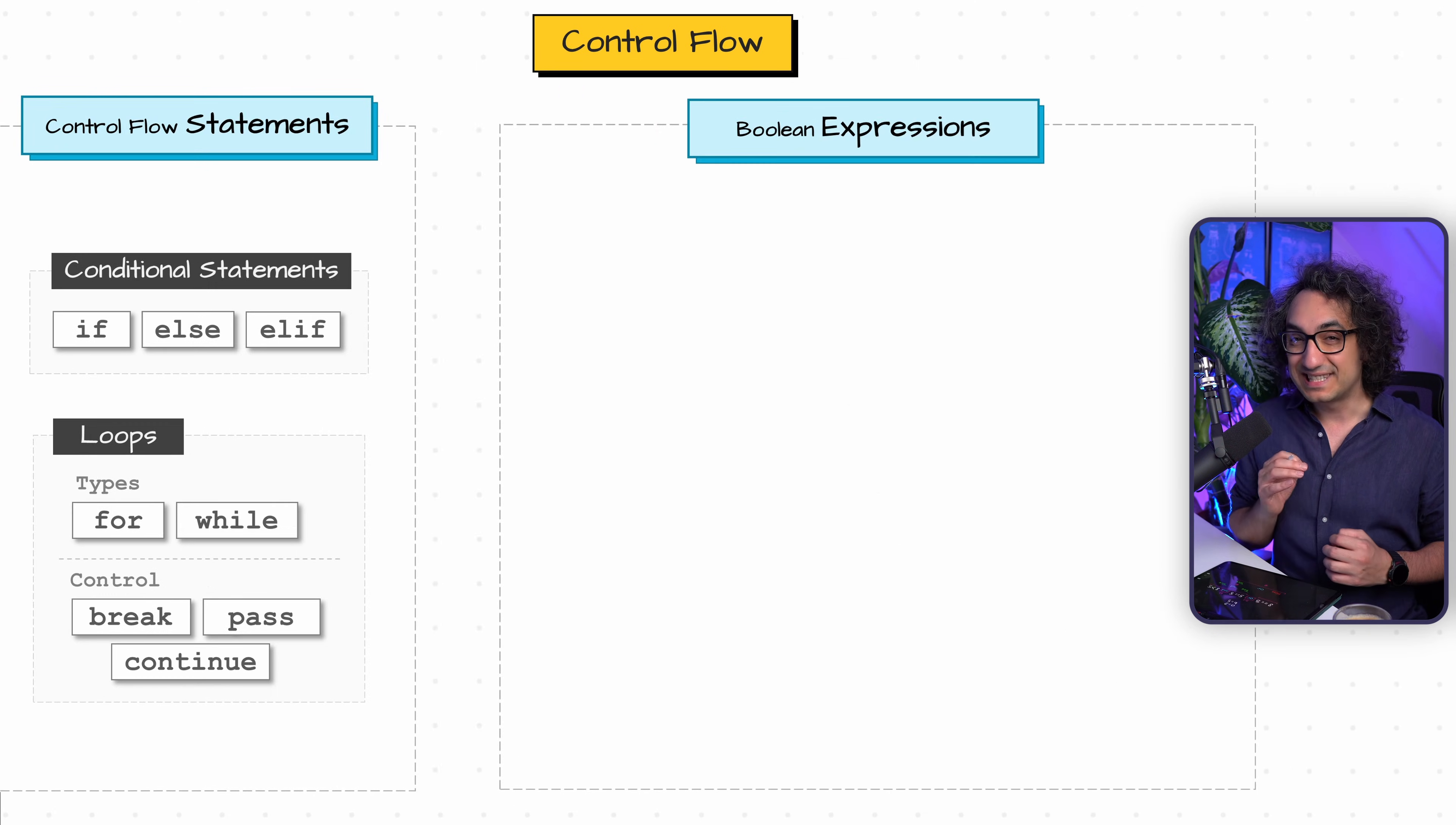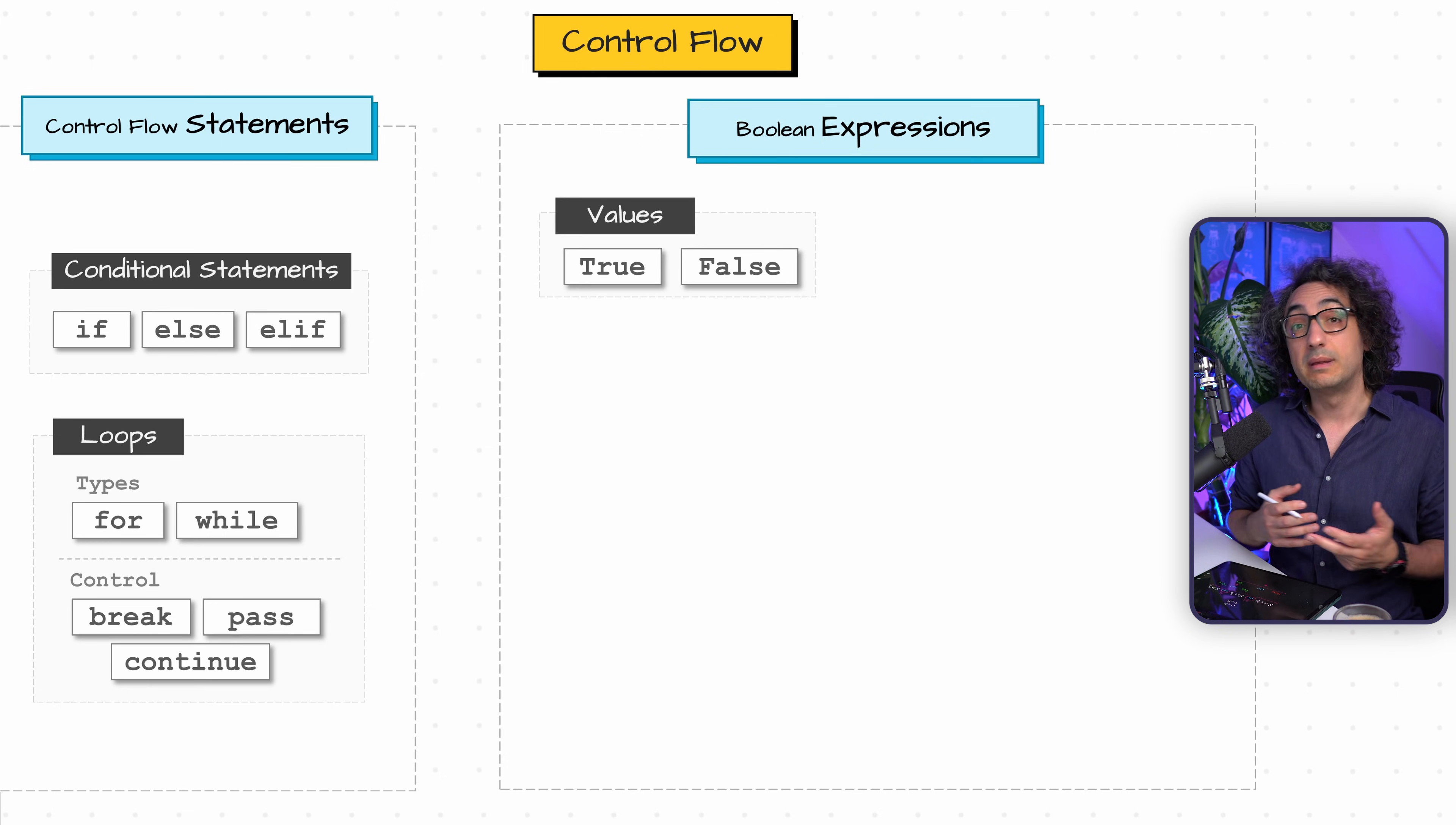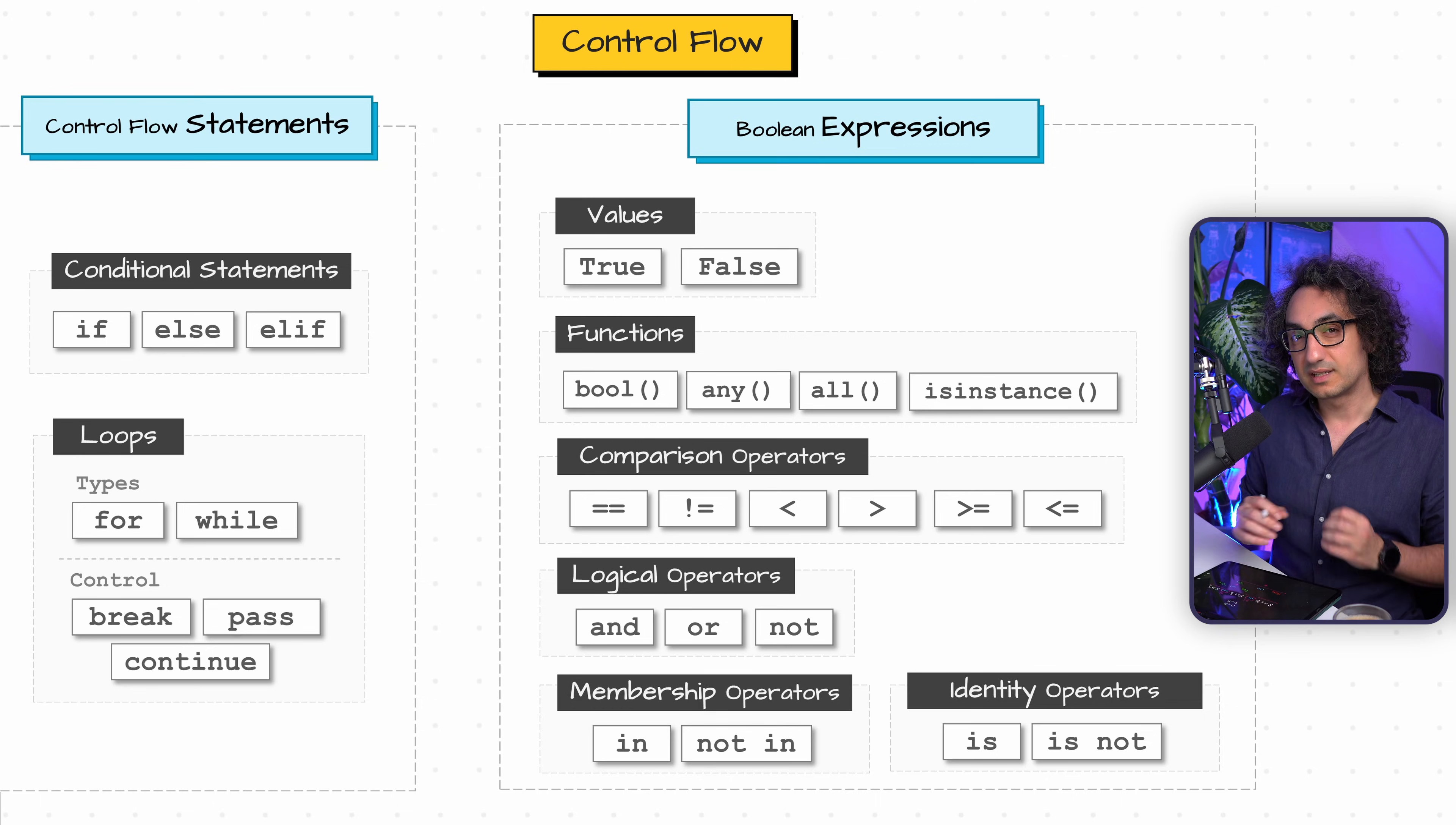Those statements are the core building blocks that we can use to build the logic and control the flow of our code. Now the statements alone are not enough - we need something essential. We need to give them conditions, the questions, the rules that Python can check. This is where the boolean expressions come in. Now we have a lot of different ways to build the expressions, like either using the values or maybe functions that return true or false. As well, we could use a lot of operators to check something like the comparison operator, the logical operator, we have membership and identity. All those expressions are very important to understand so that you have enough tools to build a logic, to build the conditions that you can use inside your statements.